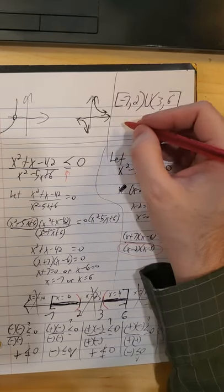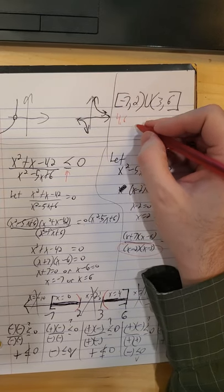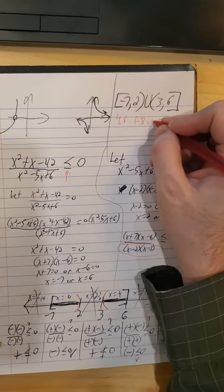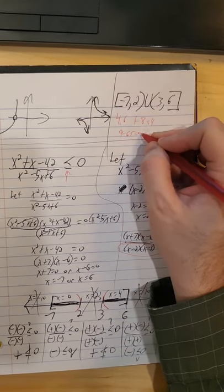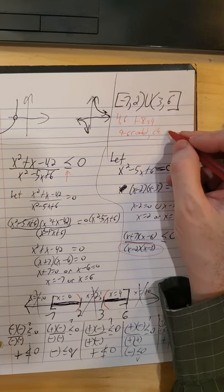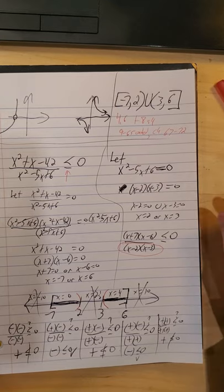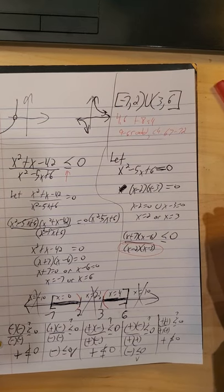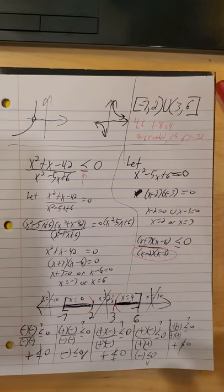So if you're looking for some problems to try out in section 4.6, I would try out 1 through 8 all, 9 to 65 on the odds. And if you're looking for challenge problems, 67 to 72 ask some interesting questions. And I'll try to create a similar kind of assignment on the MyMathLab for the folks that like that one.